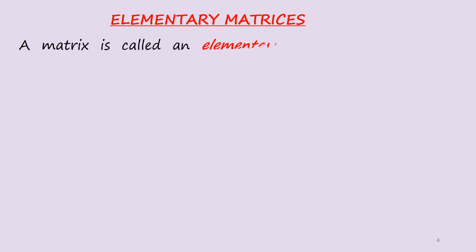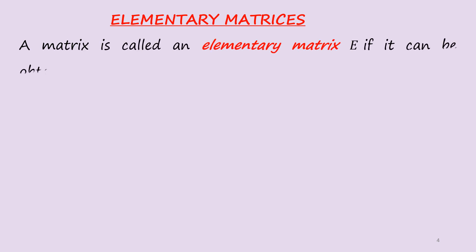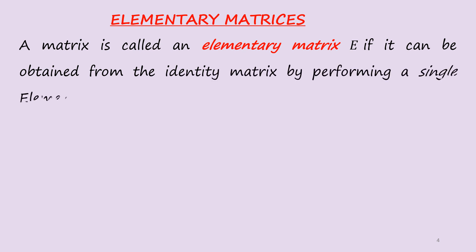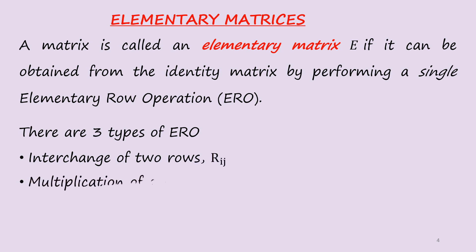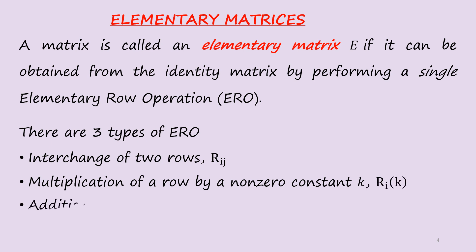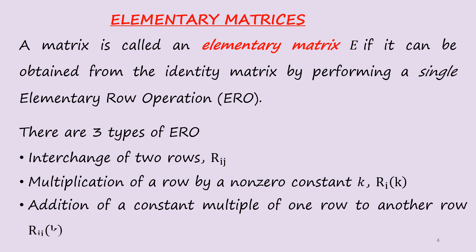Elementary matrices: a matrix is called an elementary matrix E if it can be obtained from the identity matrix by performing a single elementary row operation called E-row. We have three types of E-row. The first is that we interchange two rows, R-IJ. The second is we multiply a row by a non-zero constant K, R-IK. The third is we add a constant multiple of one row to another row, R-IJK.